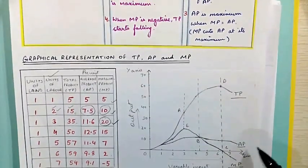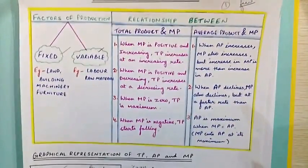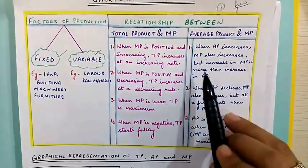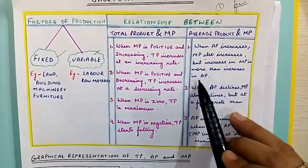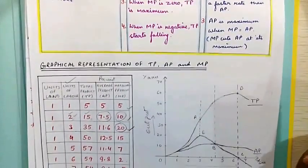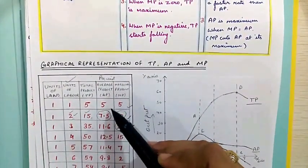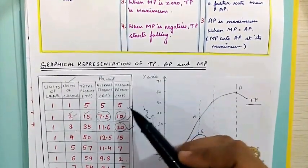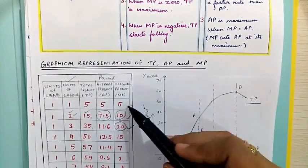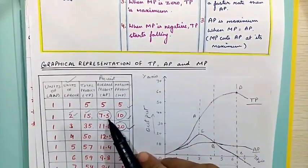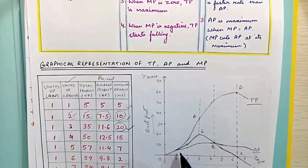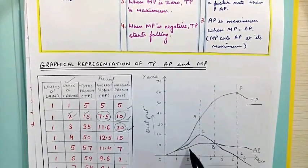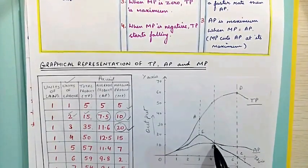Now we will see the relationship between average product and marginal product. When average product increases, MP also increases, but the increase in MP is more than the increase in AP. When average product is increasing from 5 to 7.5 to 11.6, marginal product is also increasing. As you can see in the graph, the MP line is higher than the AP line, so the increase in marginal product is more than the increase in average product.